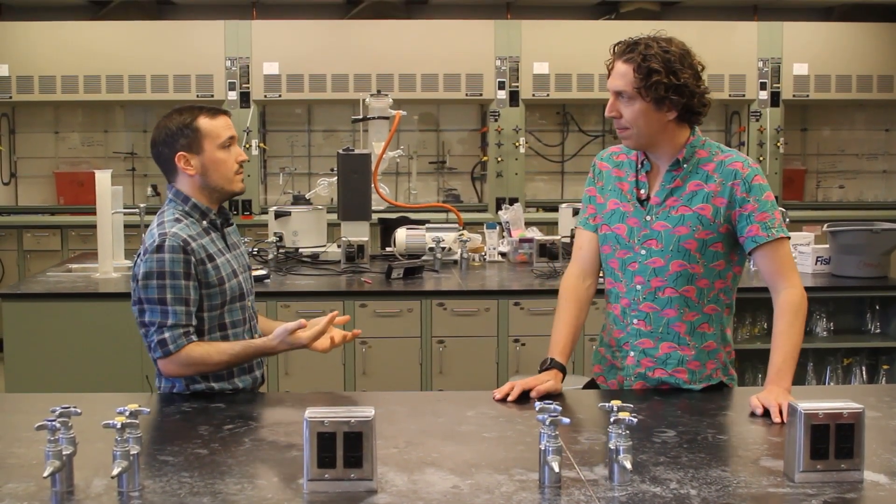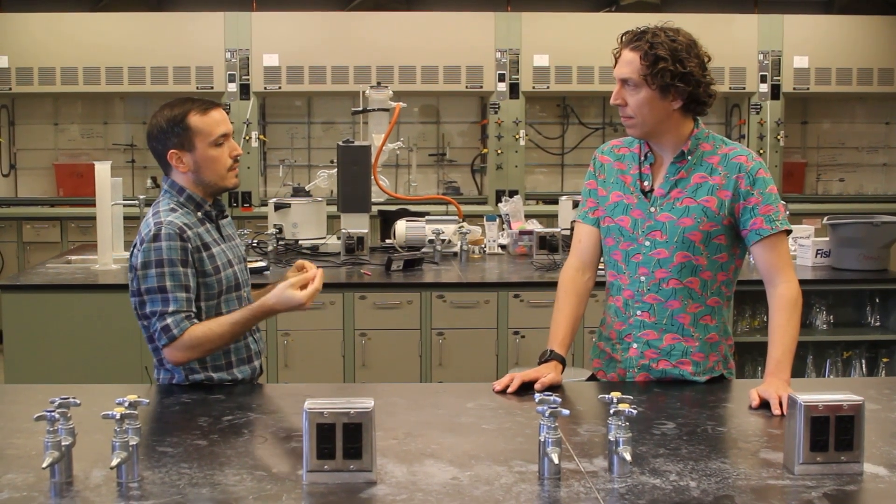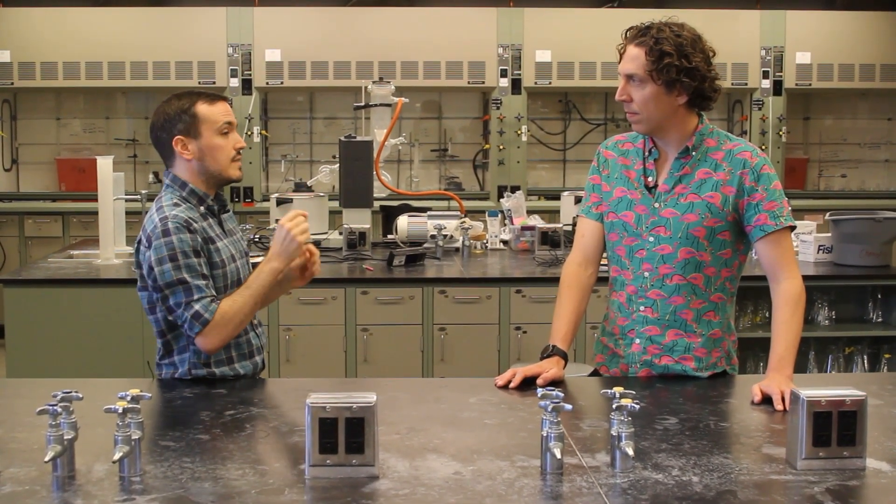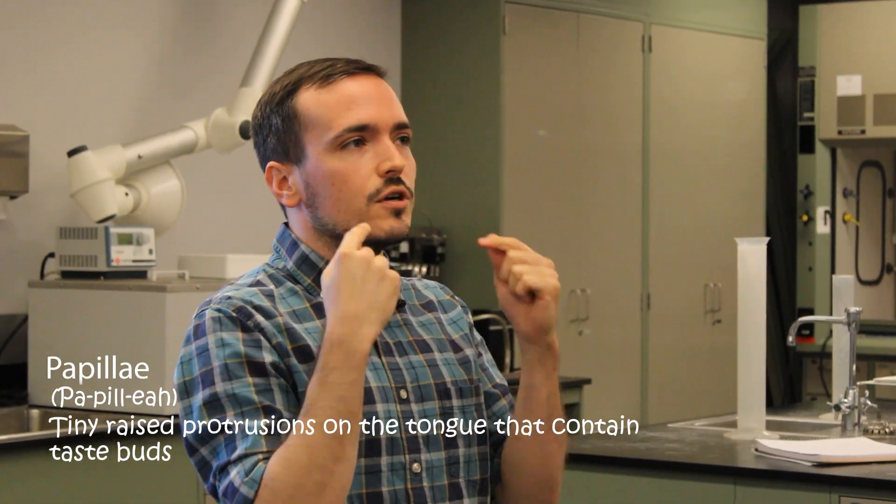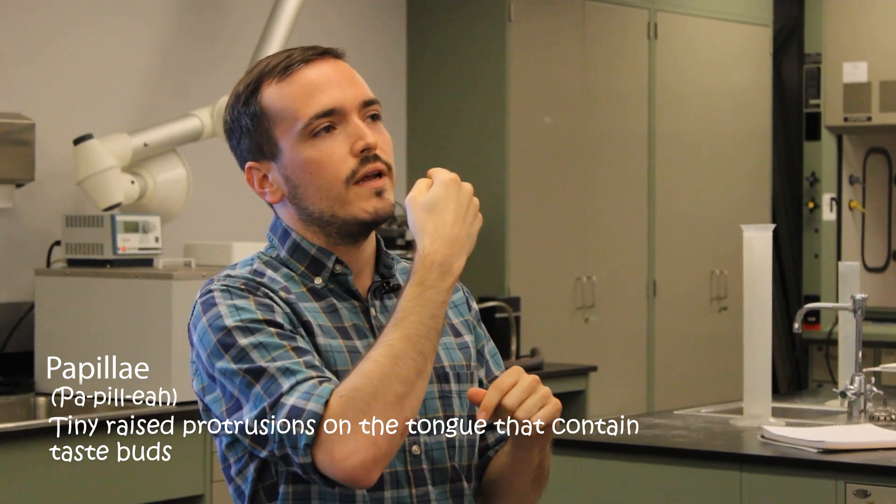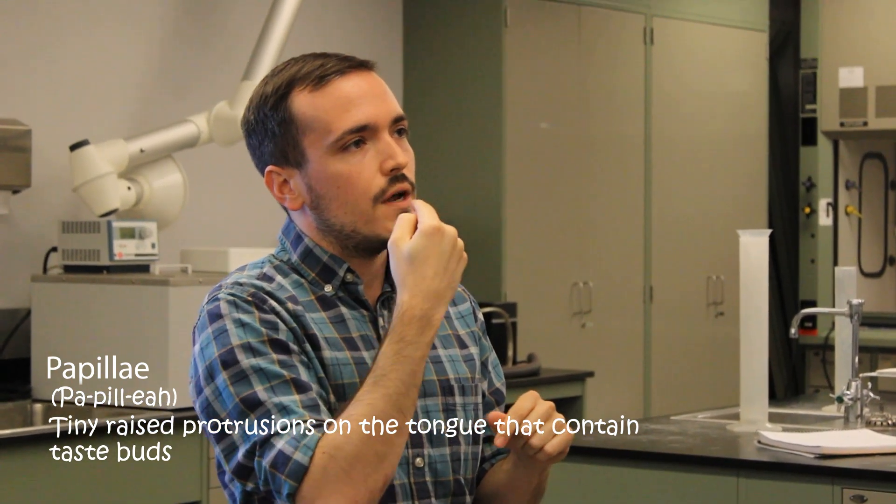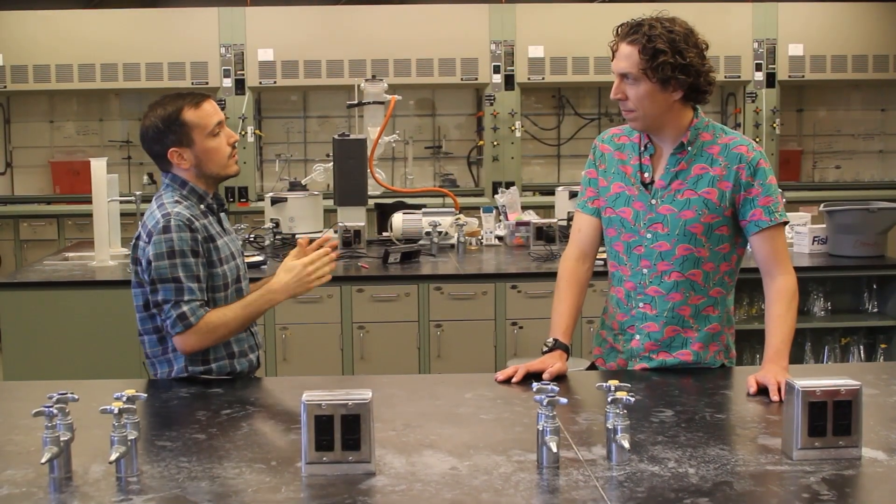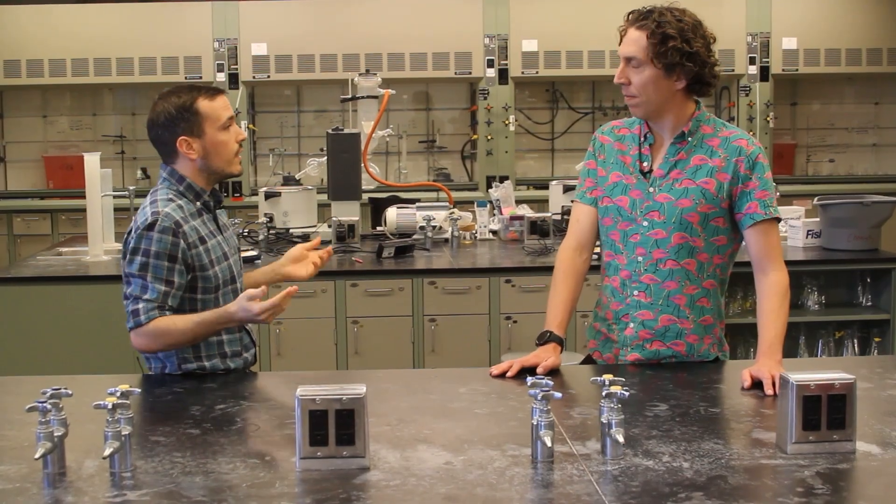So how do taste buds play into this? Well, there are different kinds of taste buds, but broadly speaking the technical term is papillae. There are different papillae in different parts of the tongue - some on the sides, some on the back that form a ring, and some in the front and all over the place. They also vary - some people have a lot of taste buds, other people don't have as many.